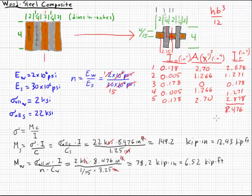In this case, failure would begin with the wood. The minimum moment to go over the allowable stress in the wood is 6.5 kip feet. Whereas the minimum moment to go over the allowable stress in the steel is 12.5 kip feet.